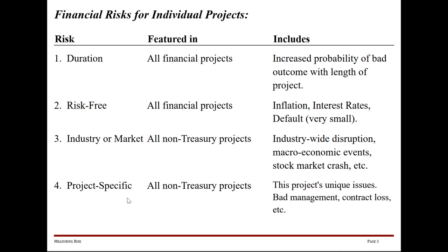Finally, we looked at project-specific risk, and that also applies to all non-Treasury projects. Treasury projects stop after risk number two; everything else continues and has all four. Project-specific risk is about this project's unique issues — things that could go wrong specific to this project — like maybe you have bad management, or you're a startup and you lose two of your three contracts.